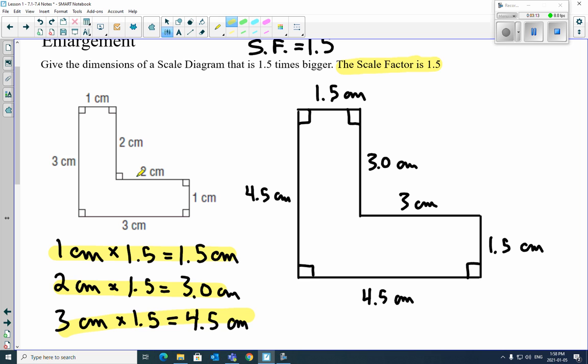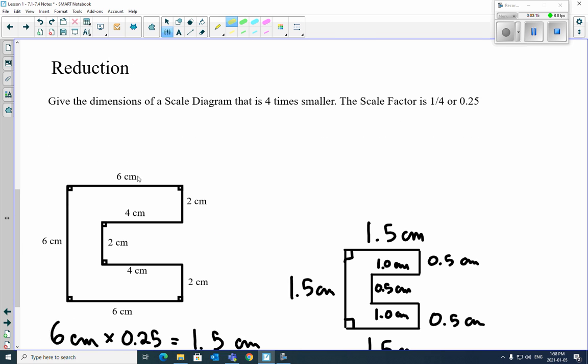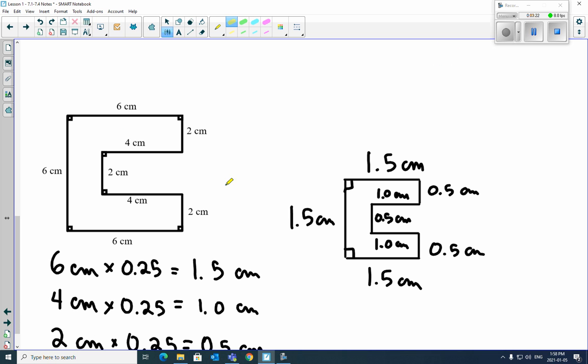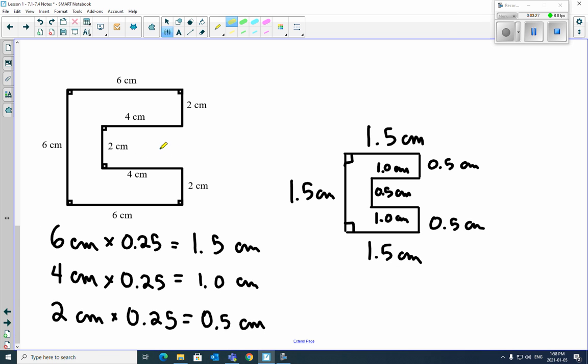That works for enlargements. Well, it also works for reductions. So here's our reduction here. The scale factor is a quarter or 0.25. It's 4 times as small, if you want to say. So all the measurements here, we still multiply by the scale factor. So the 6 centimeters gets multiplied by 0.25, we get 1.5. The 4 centimeters gets multiplied by 0.25, so it becomes 1.0 centimeters. The 2 gets multiplied by 0.25, and it becomes 0.5. And then we draw it out again with the new measurements. You can see it's 4 times as small. Again, this is not the scale. I'm just showing you how scale factor works.